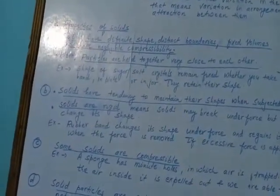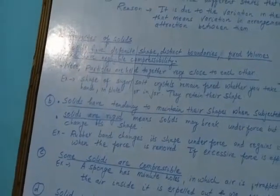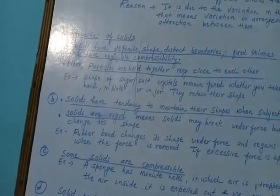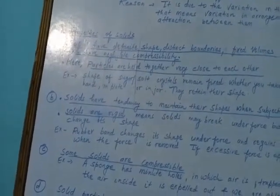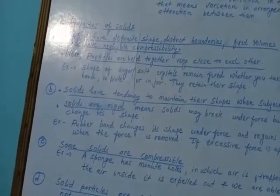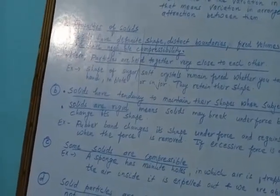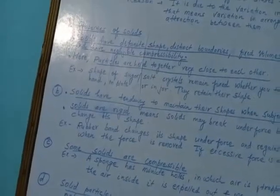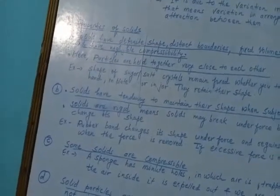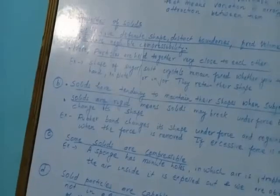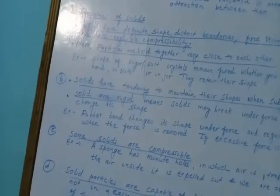We can take one example. The shape of solids like sugar and salt crystals remains fixed whether you take them in your hand, pour them in a plate, or in jars — they never change their shape. They retain their shape.